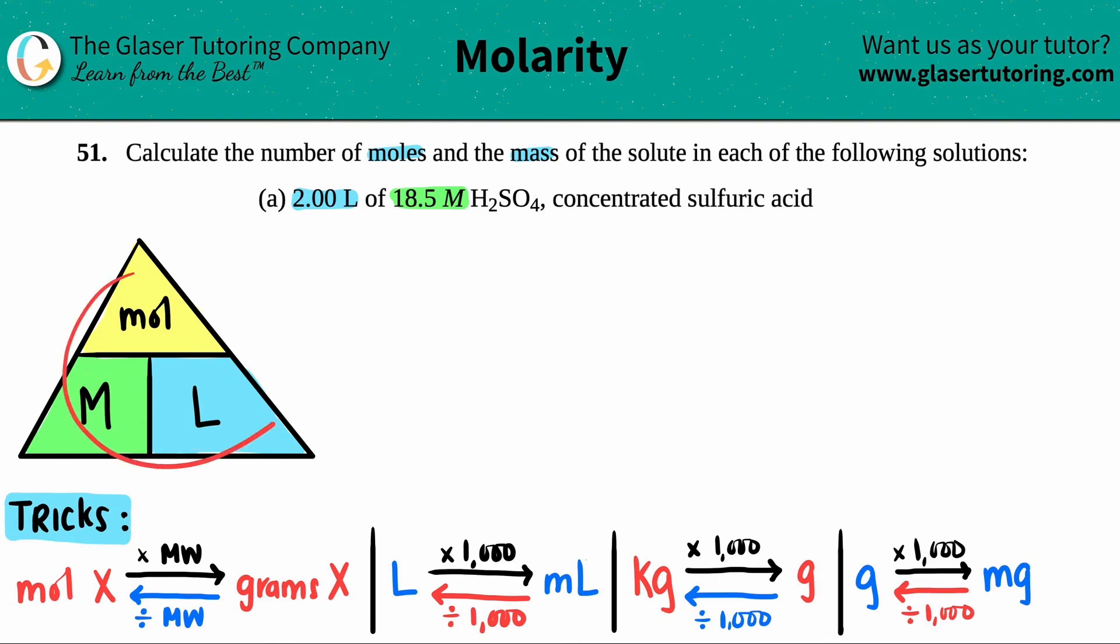Now, in order to use this triangle to get a formula, all that you're going to do is basically check the things off that you have. You have a liter, so check, and you have a molarity. Check. So what can we solve for? We can solve for the moles, and that's what the question's asking for. Calculate the number of moles.